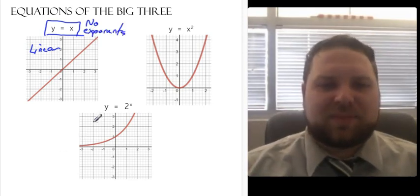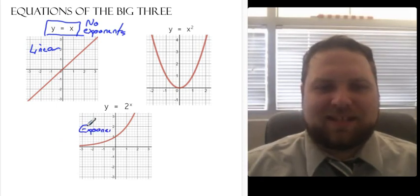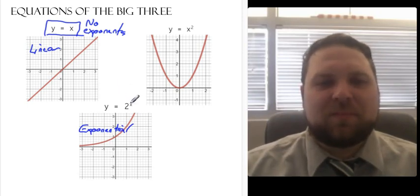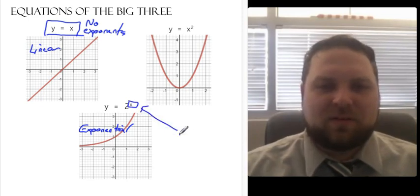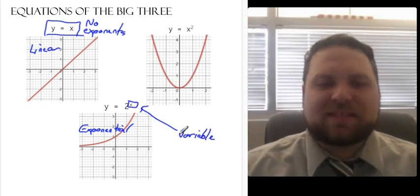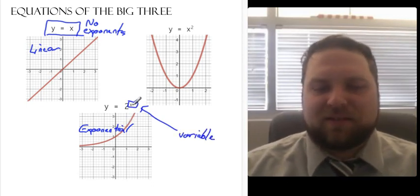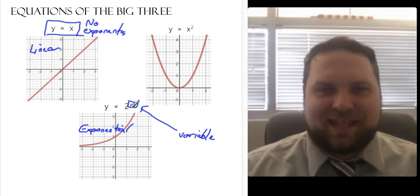When we look at an exponential function, you might guess from the name that in an exponential function there will in fact be exponents. But the neat thing about an exponential function and the thing that separates it from the rest is that in the exponent will be a variable. And this is what distinguishes it from other classes of equation is that exponential functions have variable as an exponent.